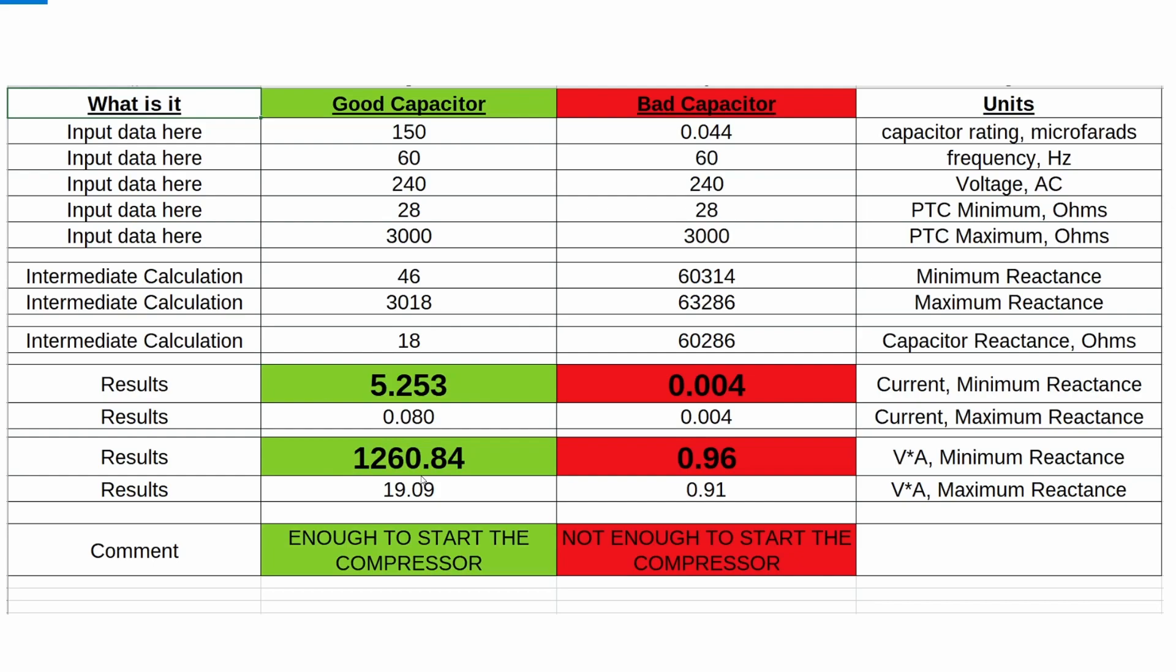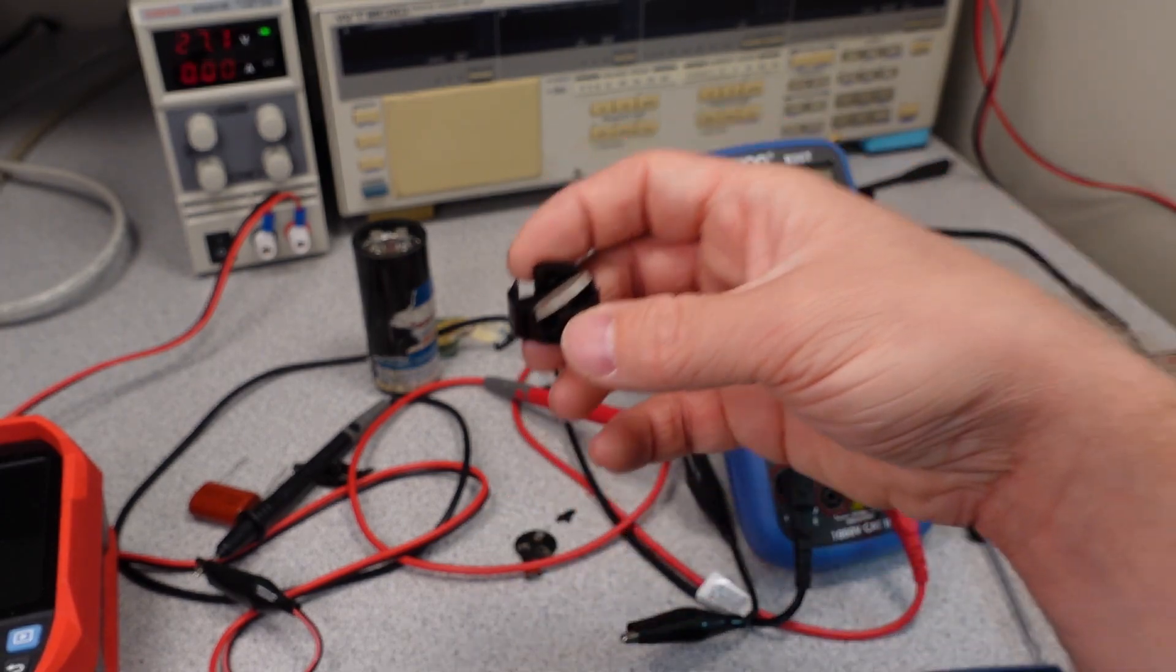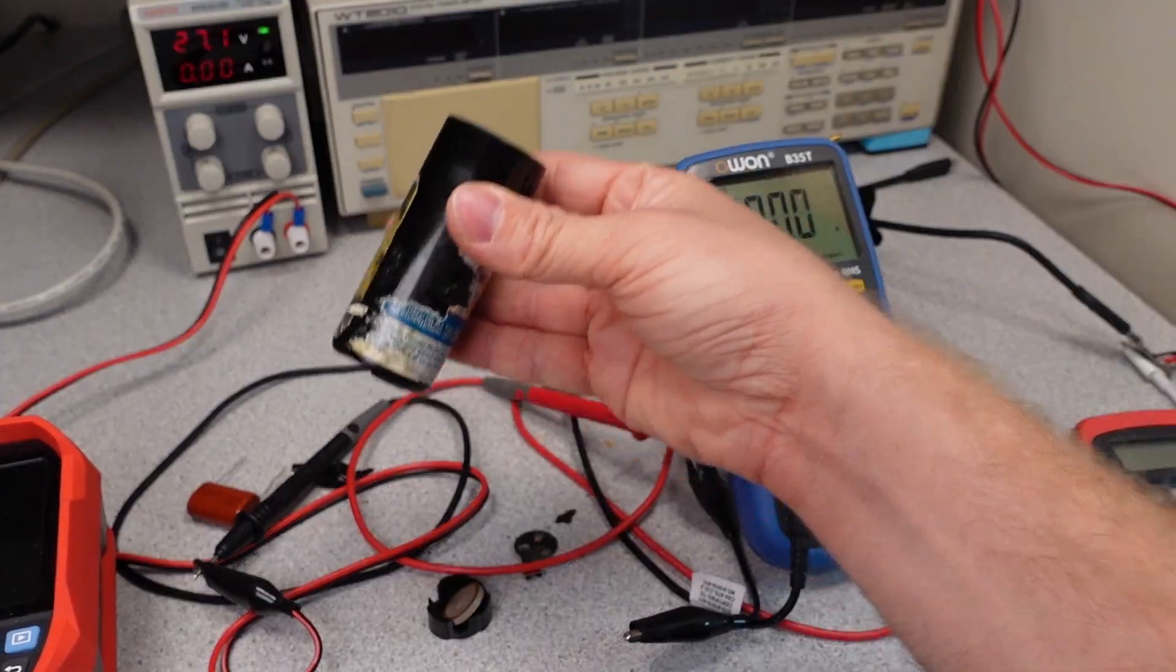When the compressor is running, the capacitor is effectively out of circuit. Just a few milliamps of current are running through it. But when it starts up and that PTC is cold, we have a high current and a lot of VA running through, which is enough to push the compressor into rotation. So this little device, as it gets hotter, the resistance gets higher, and therefore it disconnects the capacitor, which is totally cooked.